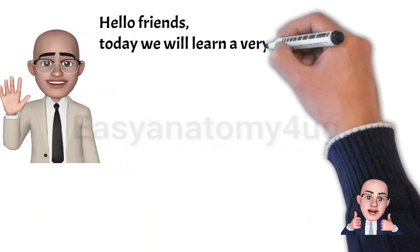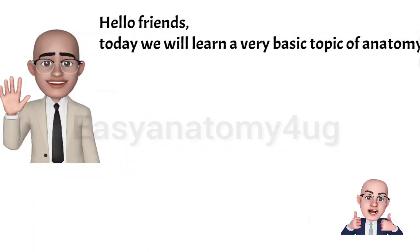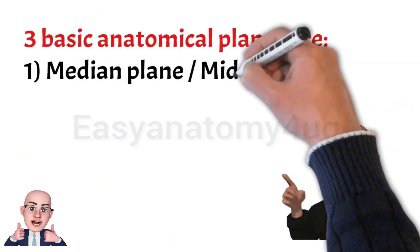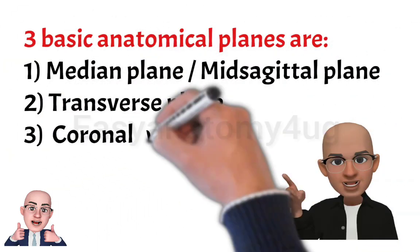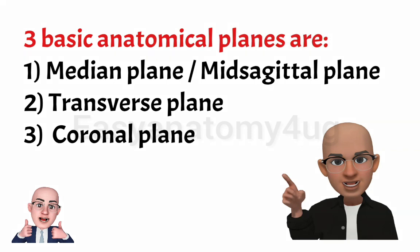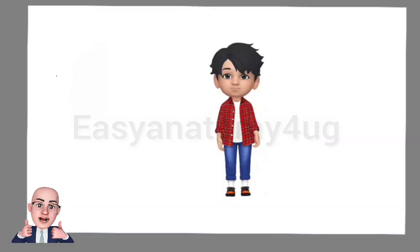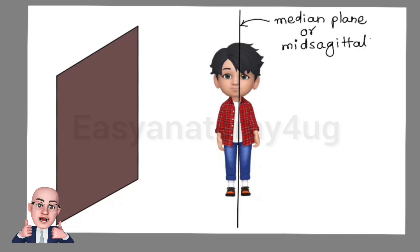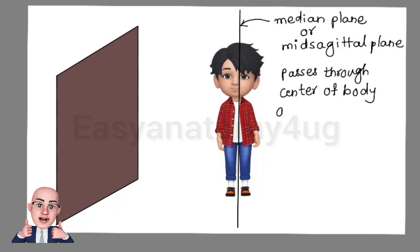Hello friends. To discuss various structures in anatomy, we need to know basic anatomical planes and axis. The basic anatomical planes are the median plane or medisagittal plane. A sagittal plane divides the body into two equal halves, right and left. A sagittal plane is any plane which is parallel to the median or medisagittal plane.